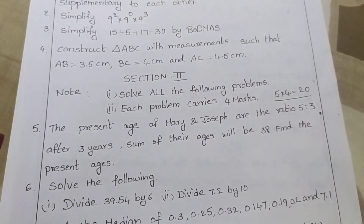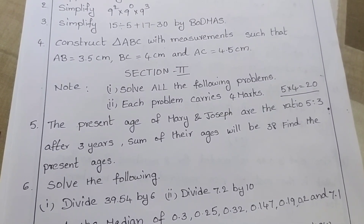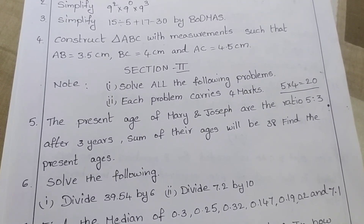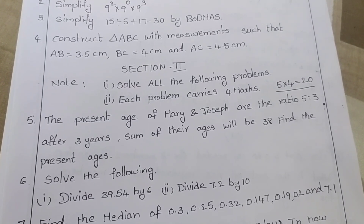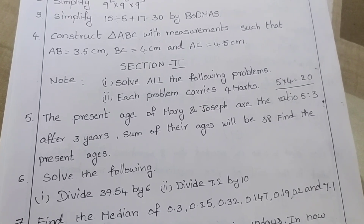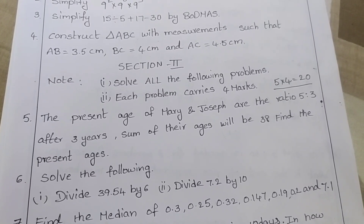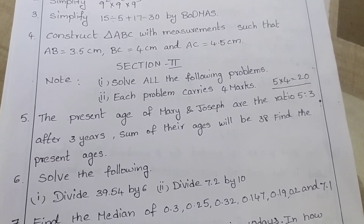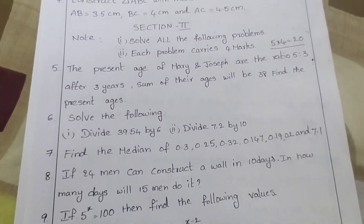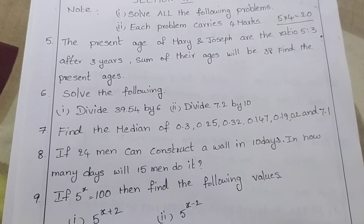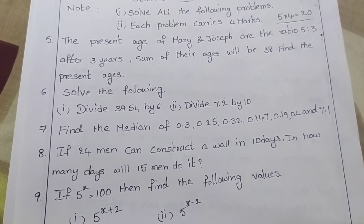Section 2: Solve all the following problems. Each problem carries 4 marks. The present ages of Mary and Joseph are in the ratio 5 is to 3. After 3 years, the sum of their ages will be 38. Find the present ages. Divide 39.54 by 6.